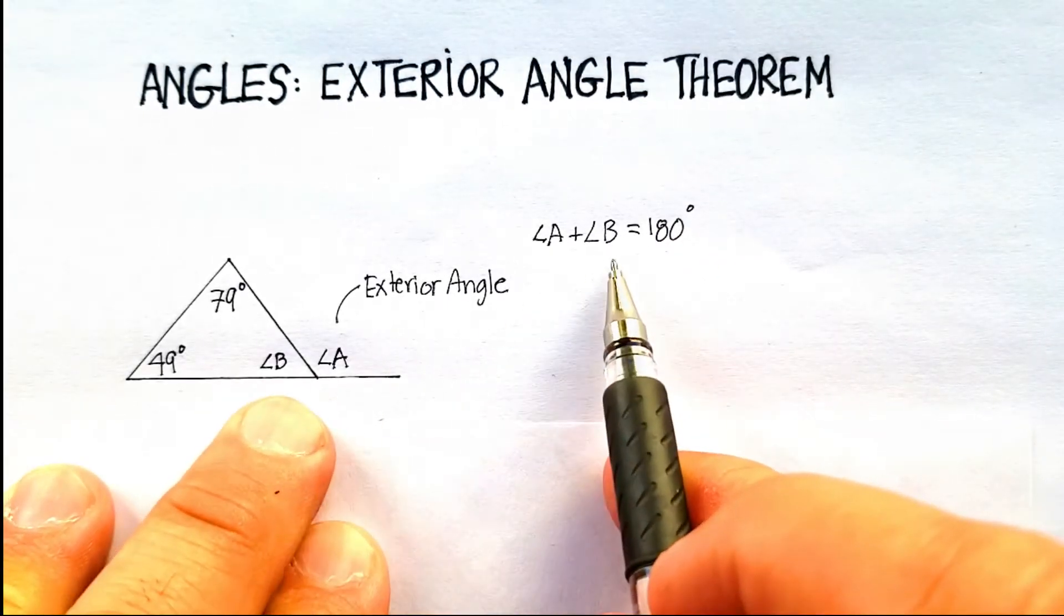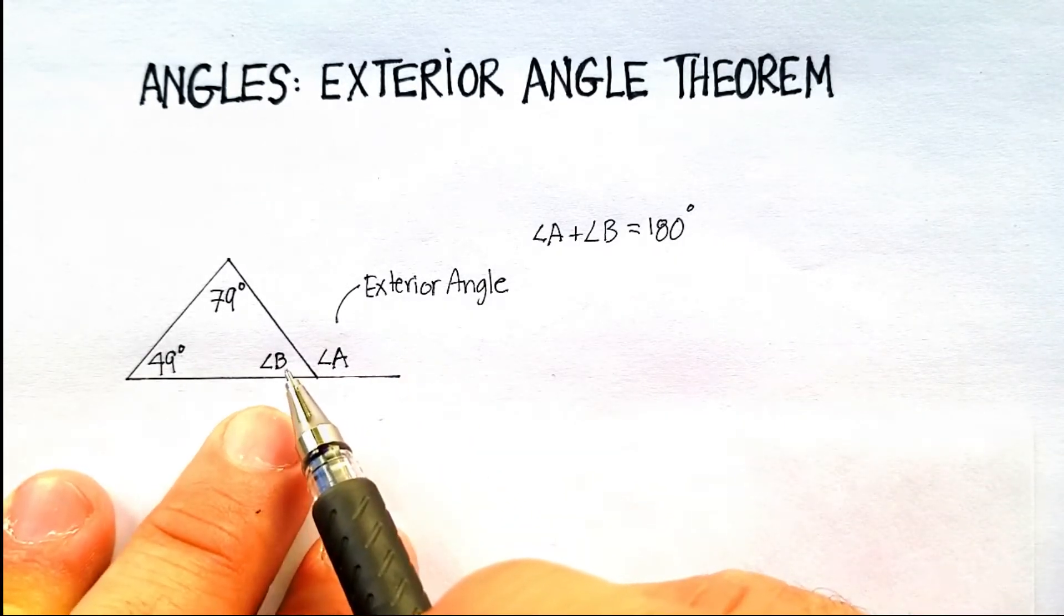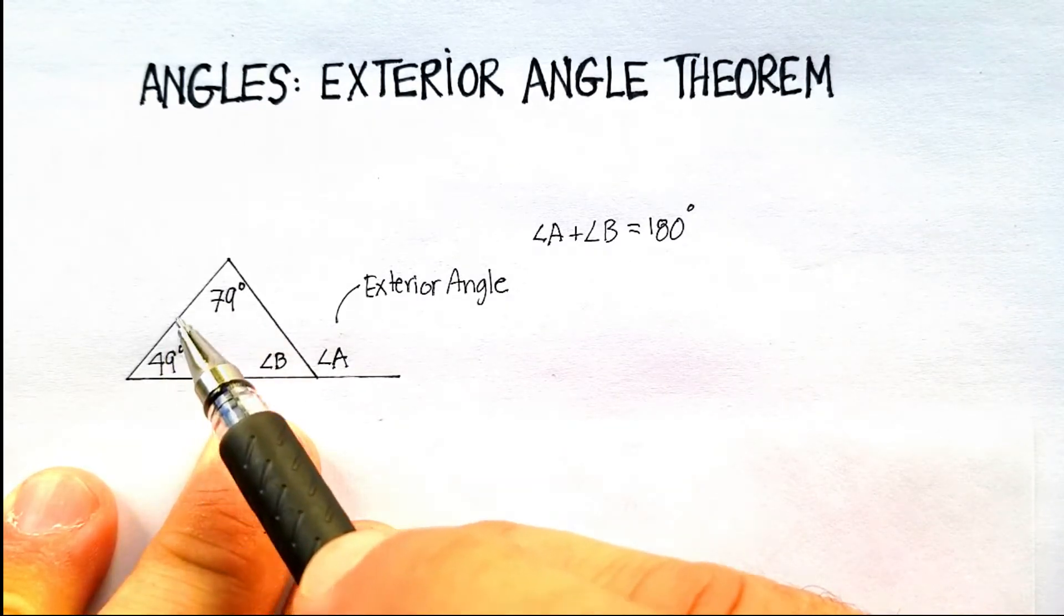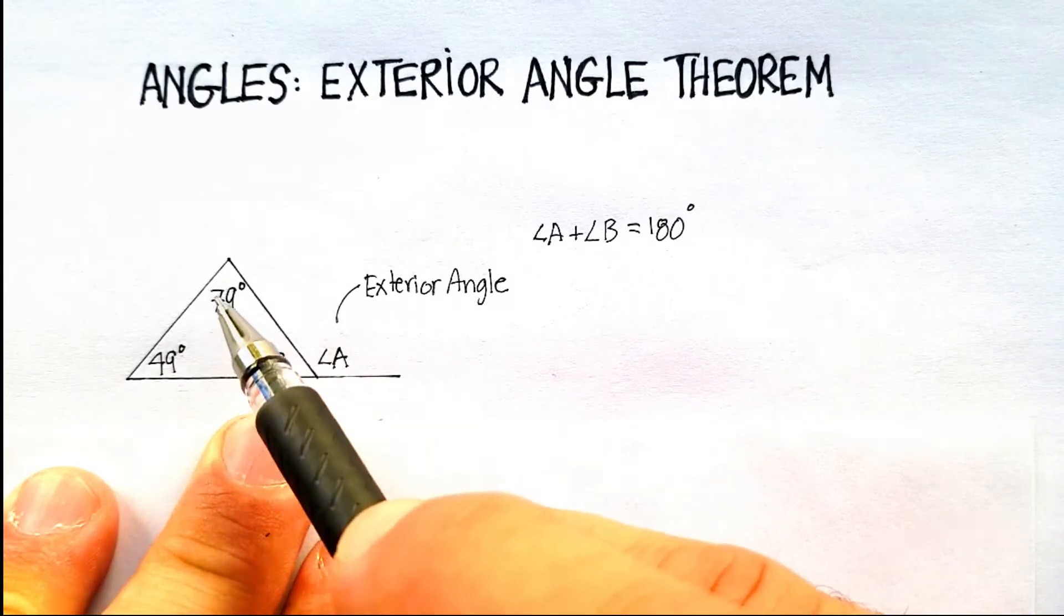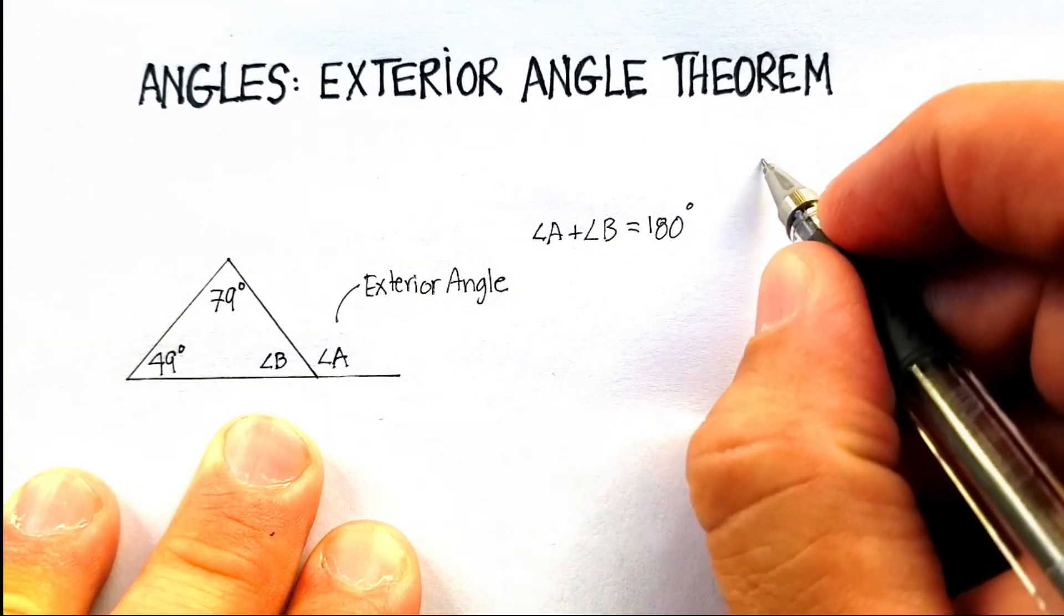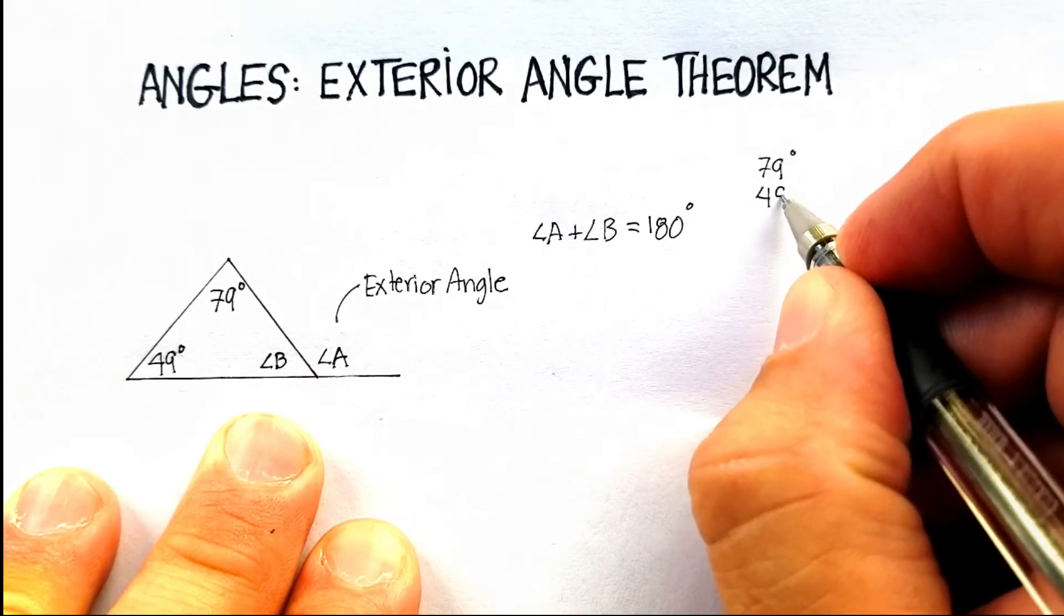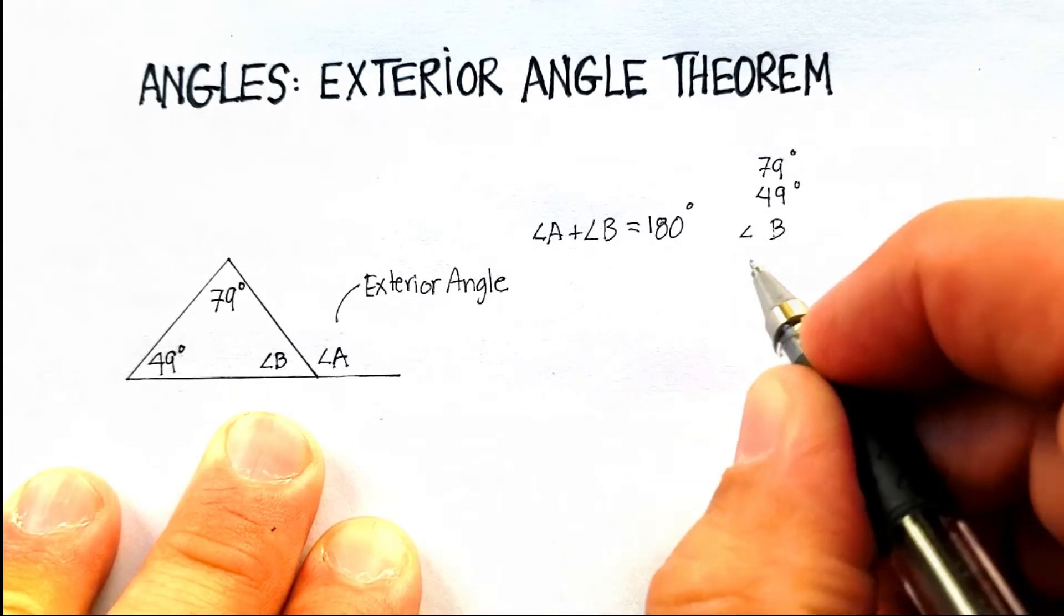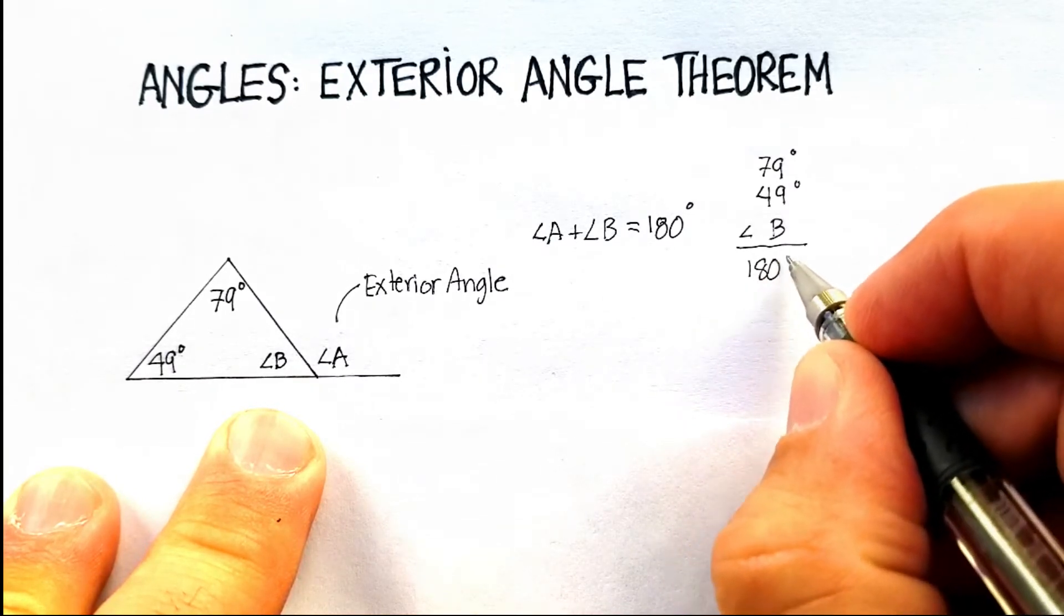Now, do we have any way of finding out what angle A or angle B is? Well, we do, according to our theorem. And one of the theorems that we also know is that angle B plus this angle plus this angle should also equal 180 degrees, because the angles in a triangle will always be equal to 180. So off to the side here, let's just go with 79 degrees and 49 degrees and angle B. We know that they should equal 180 degrees.